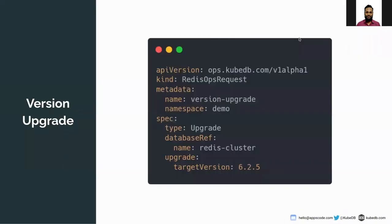Here you can see the version upgrade YAML. All other fields are the same as the previous ops request. In the spec we need to specify the type — the type should be 'upgrade'. The database reference contains the database we want to update, and then in the upgrade section we have the target version, which I have provided as 6.2.5 because I want to go to that version.